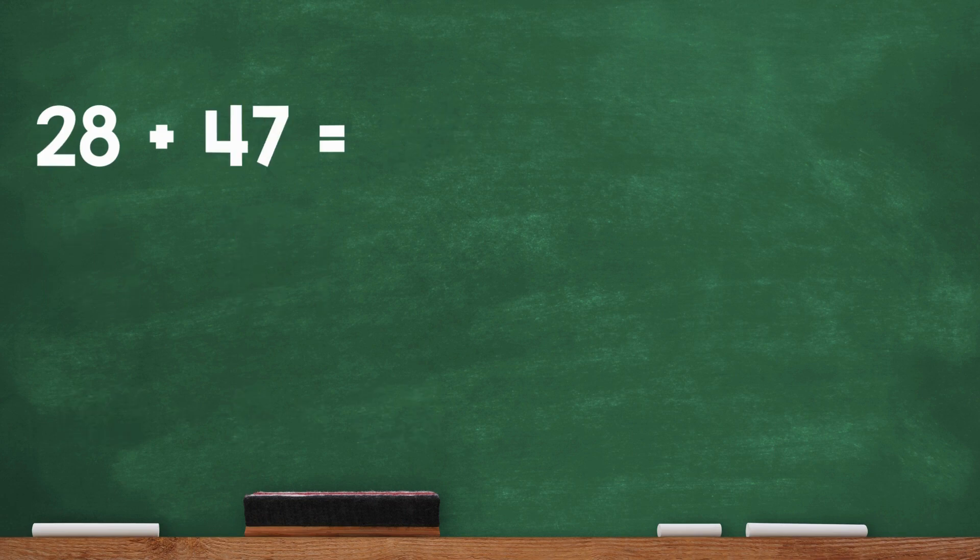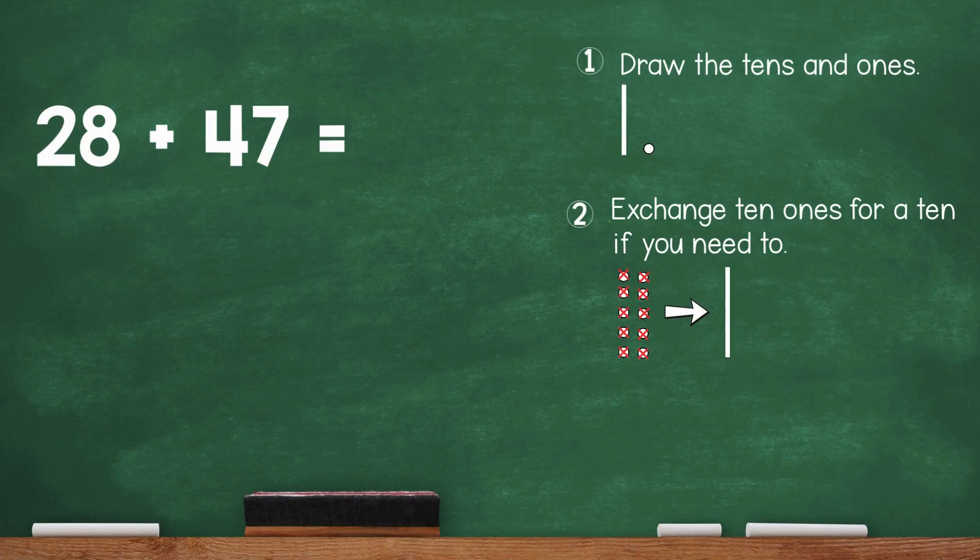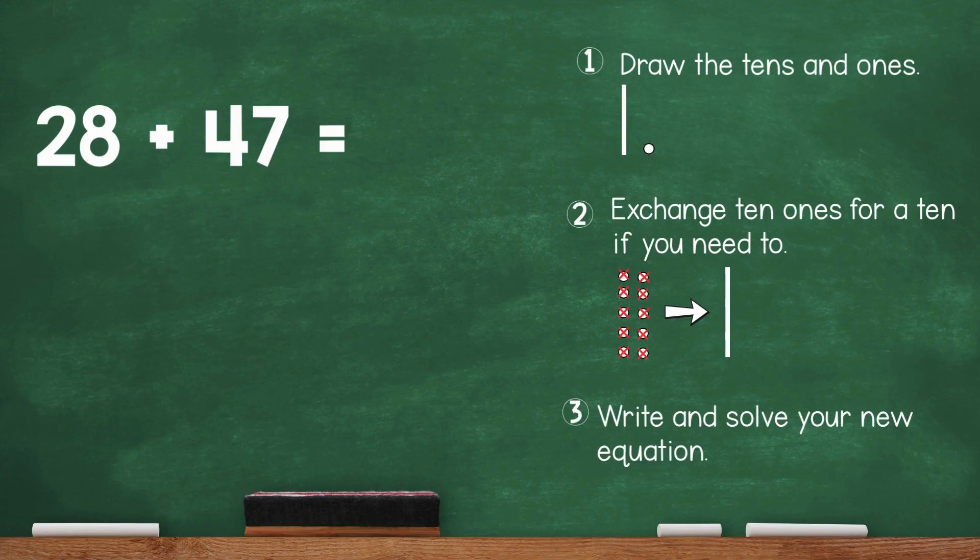Write this equation down. You're going to solve it on your own. First, you should draw the tens and ones. Then, if you have more than 10 ones, you should exchange 10 of them by crossing out 10 ones and replacing them with a 10. Finally, write and solve your new equation with the tens and ones you have. The steps are written for you on the screen. Press pause while you work.